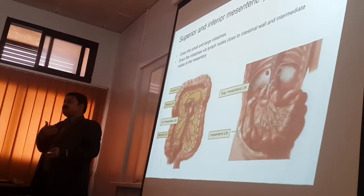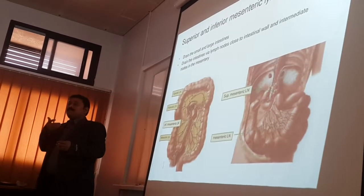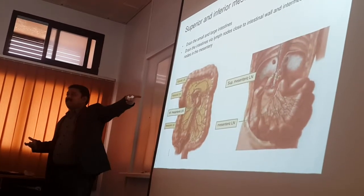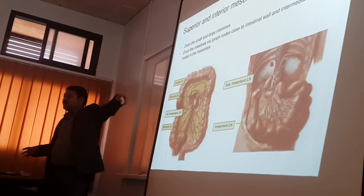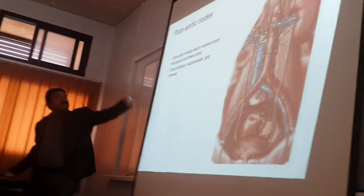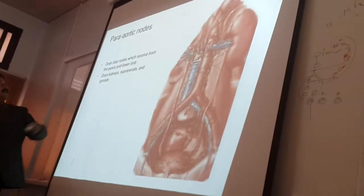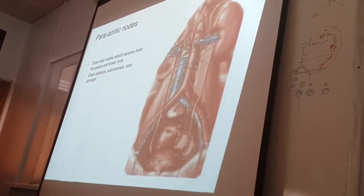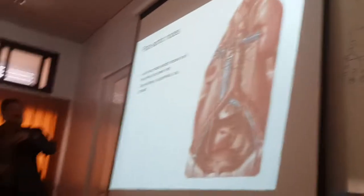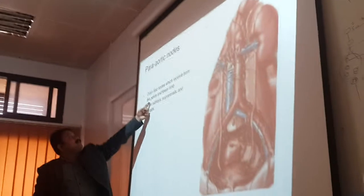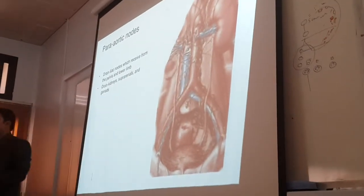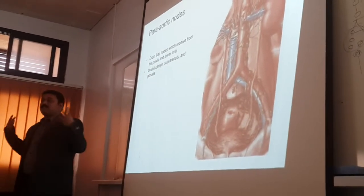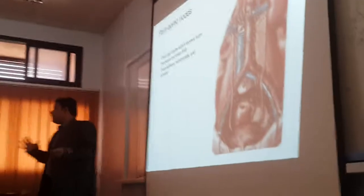To summarize the abdominal lymphatic plan: pre-aortic nodes include the celiac, superior mesenteric, and inferior mesenteric groups. Para-aortic nodes lie on either side of the aorta and drain the pelvis and lower limb lymph (via iliac nodes), as well as the suprarenal glands, kidneys, and gonads. All ultimately drain into the cisterna chyli.